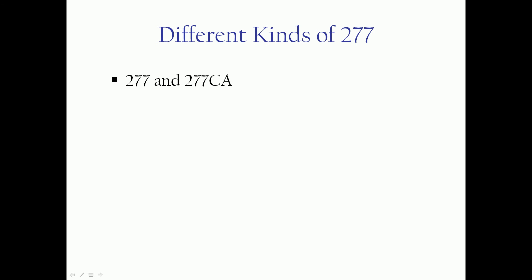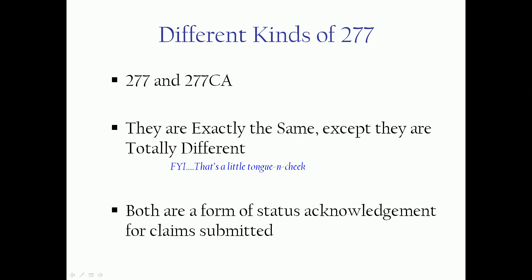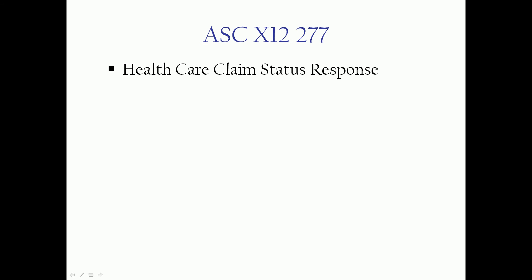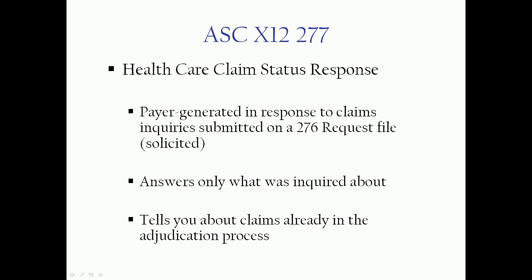There are a couple of different kinds of 277 and you may see them both, because it's not strictly governed by legislation so there is some variation. We have the 277 proper and the 277 CA. They are exactly the same except they are completely and totally different. Both are a form of status acknowledgement for claims that have been submitted. The 277 proper is a healthcare claim status response file — the operative word being response. It's payer generated and in response to a claims inquiry submitted from a provider on another EDI file called the 276. So they're asking what is the status of specific claims — it's solicited — and the response answers only what was inquired about, covering claims already in the adjudication process.